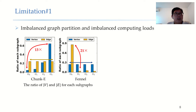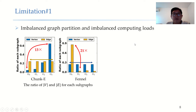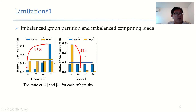We will now show the limitations of existing graph partition algorithms and their influence on graph processing systems. The first limitation is imbalanced graph partition leading to imbalanced computing nodes. We partition the Twitter graph into four subgraphs using chunkE and Fennel. We can see that for chunkE, the number of vertices is very imbalanced — subgraph 3 contains 13 times more vertices than subgraph 0. For Fennel, the number of edges is very imbalanced — subgraph 0 contains 21 times more edges than subgraph 1.